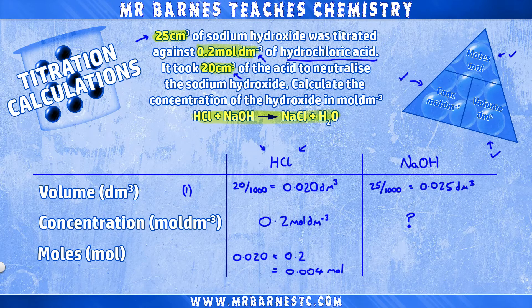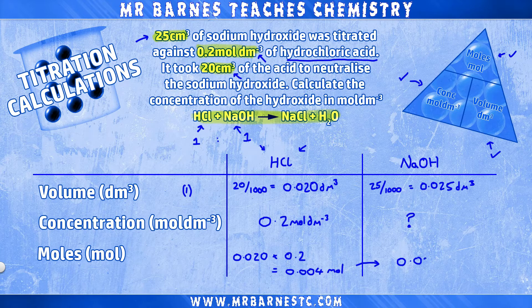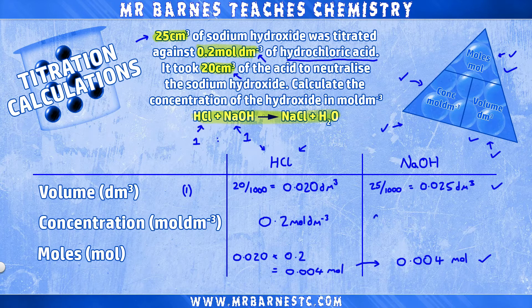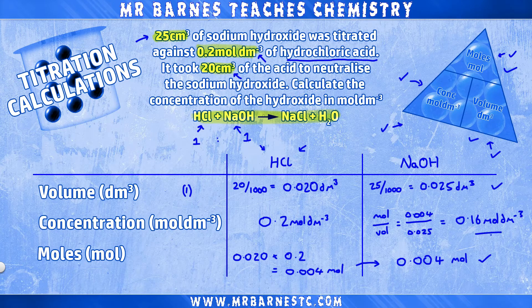We now have the moles for hydrochloric acid but we need it for sodium hydroxide. For this question that's easy — we have a ratio of 1 to 1 between hydrochloric acid and sodium hydroxide, so the moles are the same: 0.004. It can become slightly more complicated when you have a ratio of 1 to 2, and I'll get onto that later. But for now, we have the volume and moles of sodium hydroxide, so concentration is moles divided by volume: 0.004 divided by 0.025 gives 0.16 moles per decimetre cubed — our final mark.